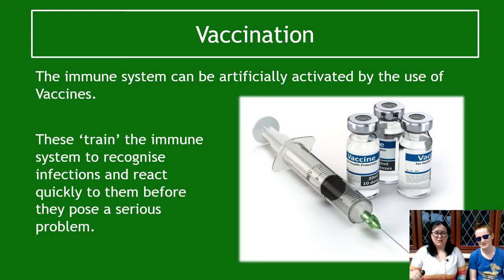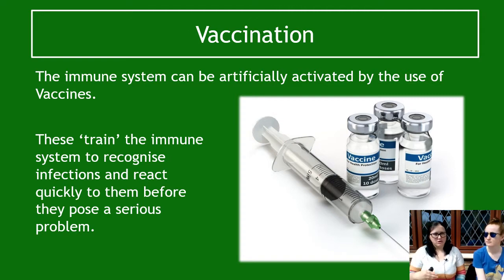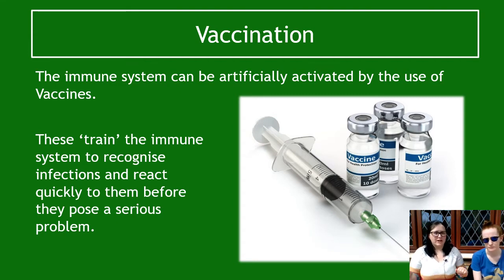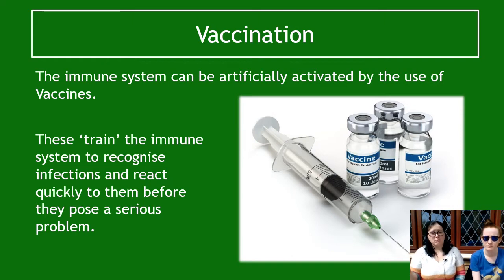The immune system can be artificially activated by the use of vaccines. Thinking back to what we previously learned about the specific immune response, vaccines activate that so that we get that fast second antibody response to infection. This means that a person won't get ill, or maybe the effects of the illness will be reduced. The vaccine trains the immune system to recognize infections and react quickly before they cause a serious problem.